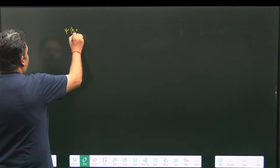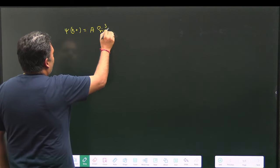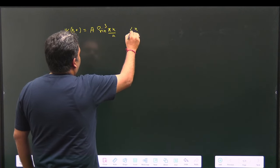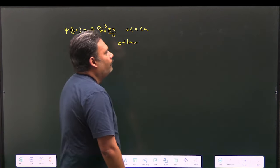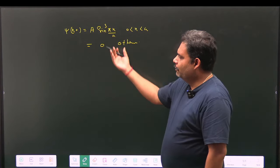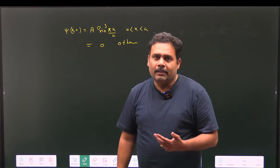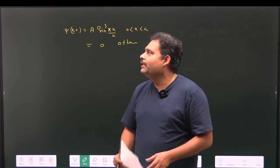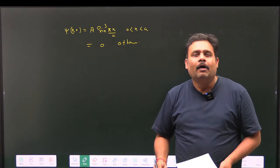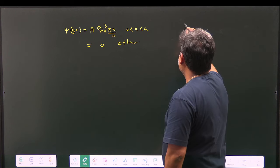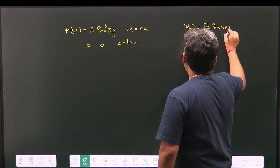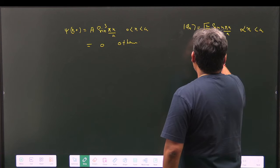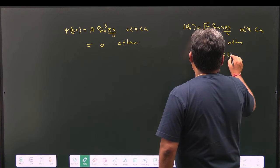In this problem, ψ(x) is given as A sin³(πx/a) for x between 0 and a, and 0 otherwise. Before finding A, we need to write this function in a basis of energy eigenstates (stationary states). The stationary state for this system is φₙ = √(2/a) sin(nπx/a) for x between 0 and a, with n = 1, 2, 3, ...